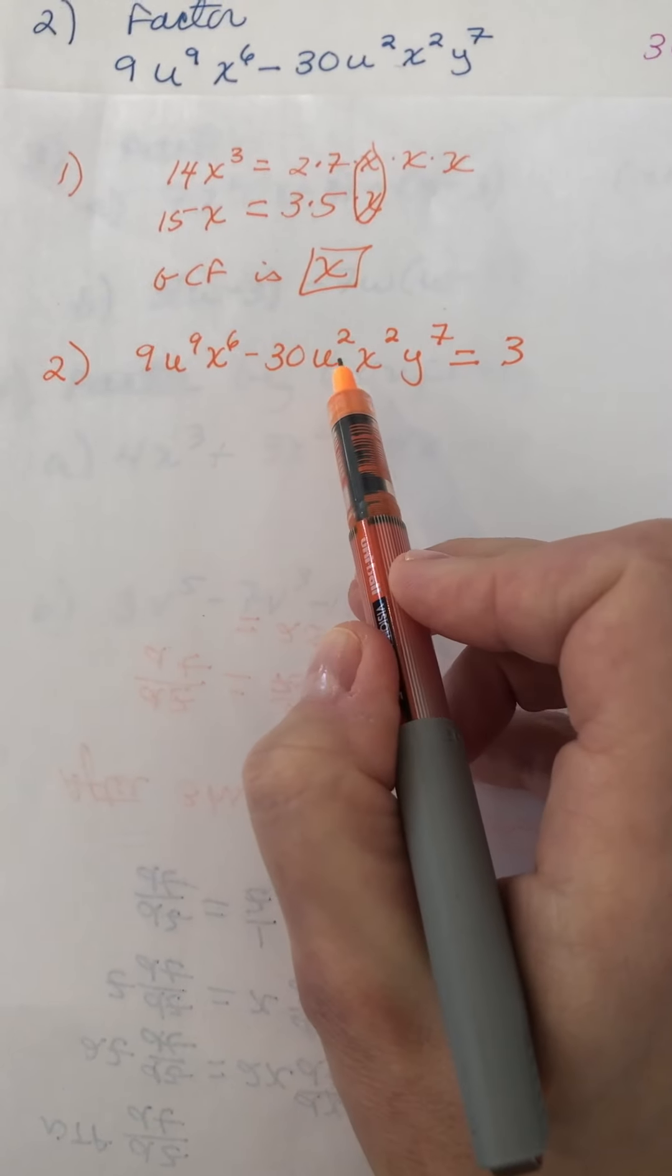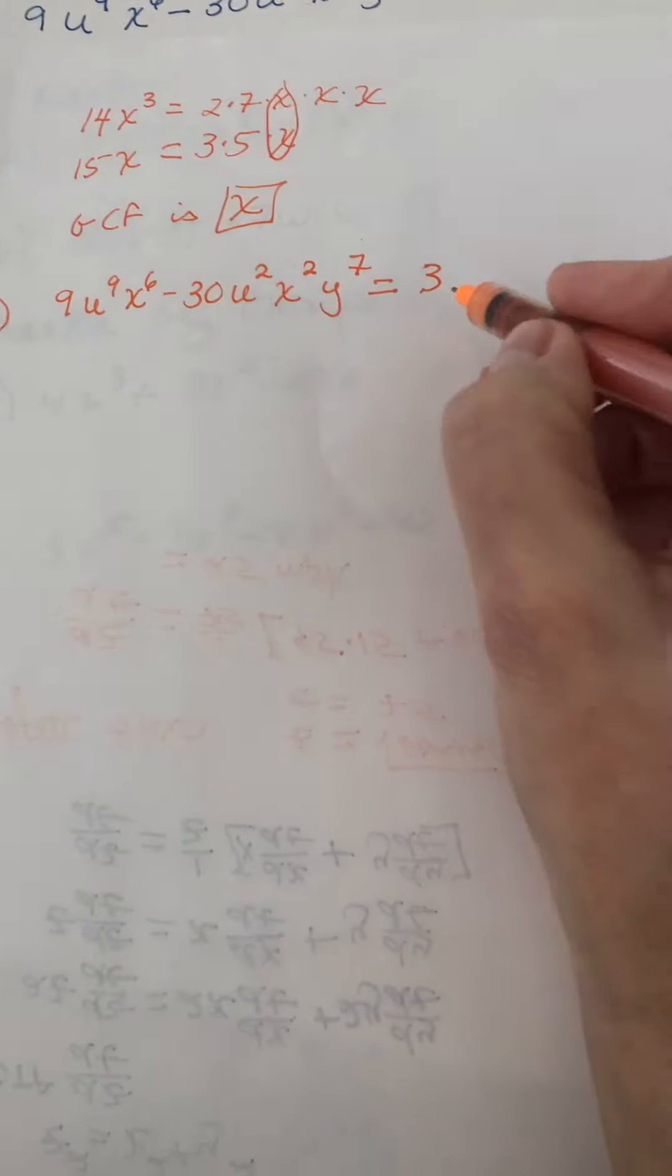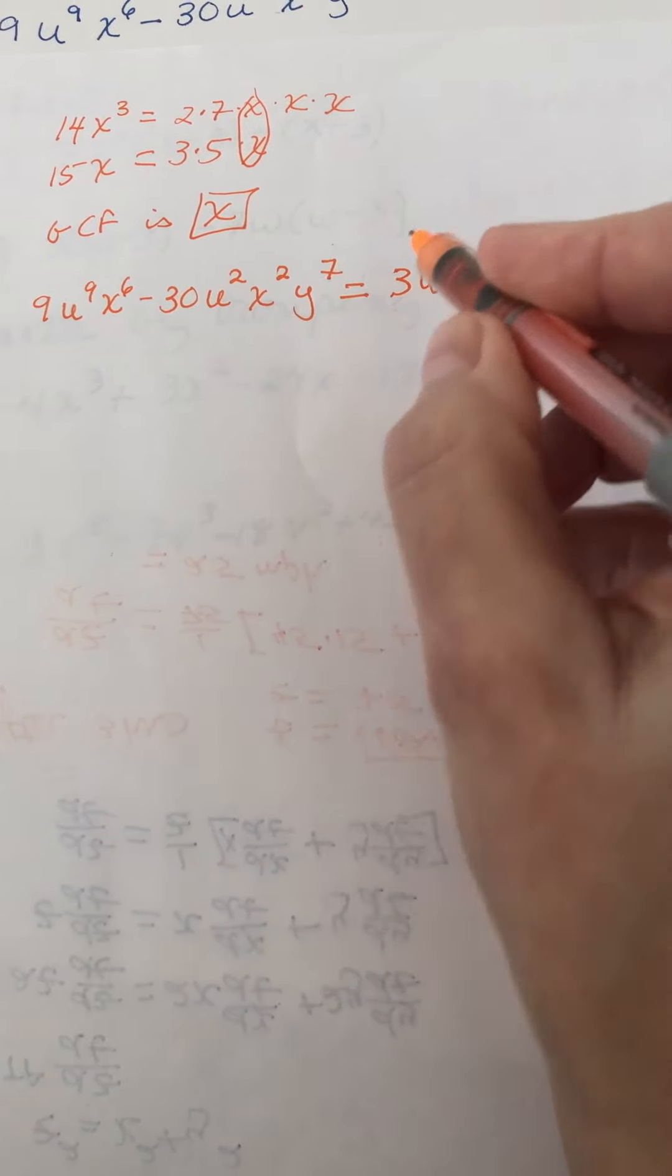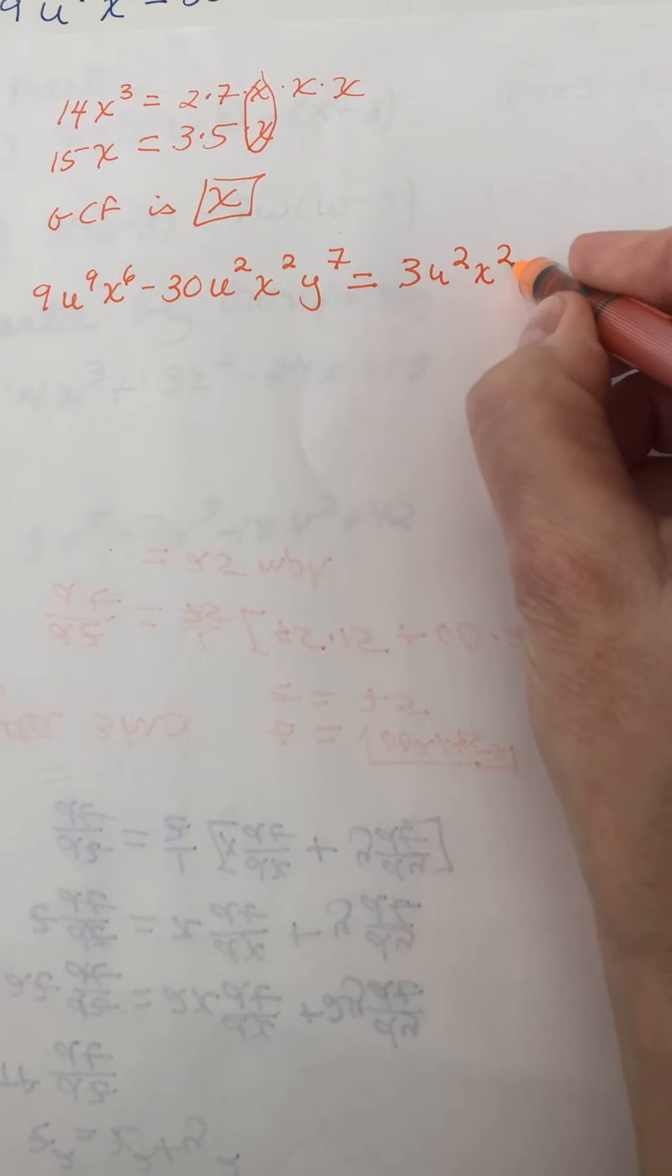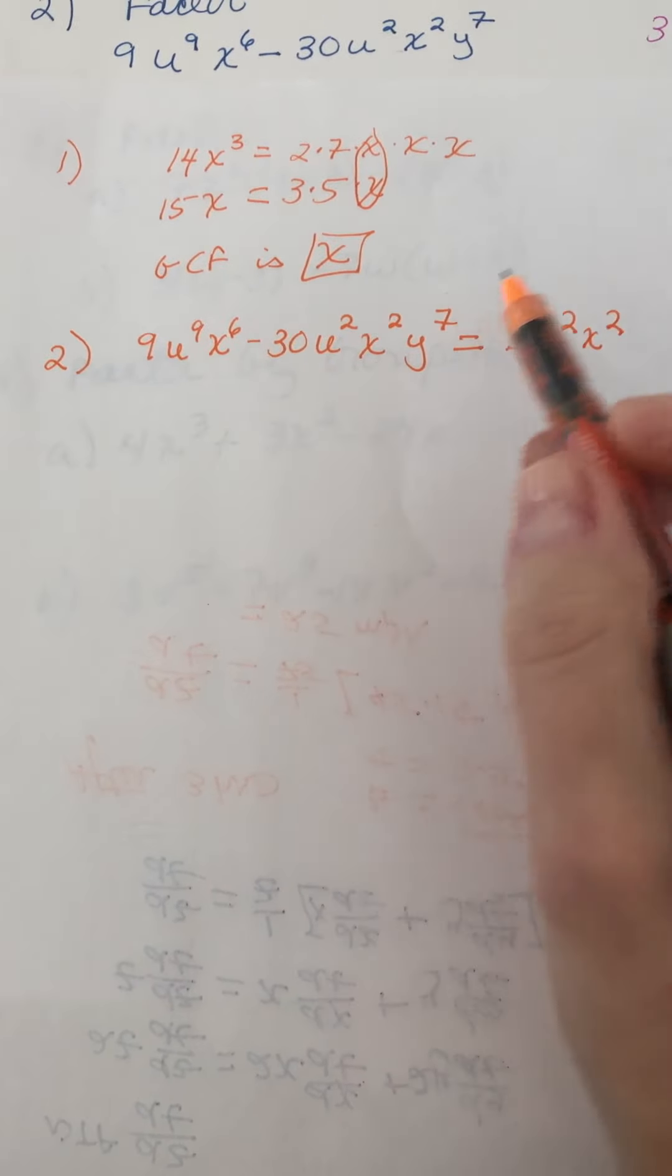And then let's look at the u's. There are 2 u's in common, there are 2 x's in common, and there are no y's in common.